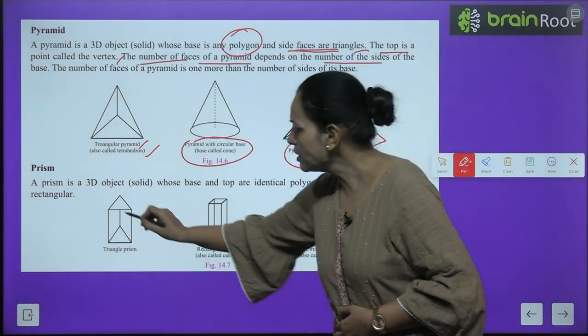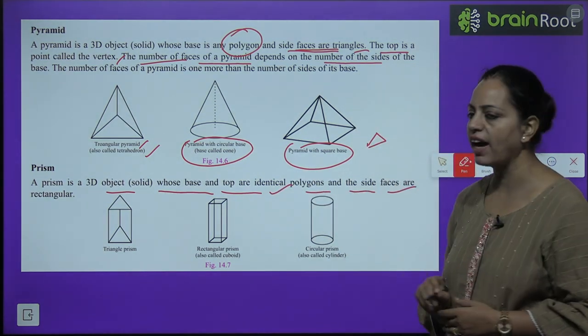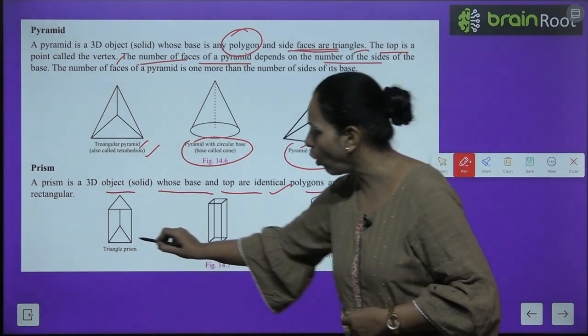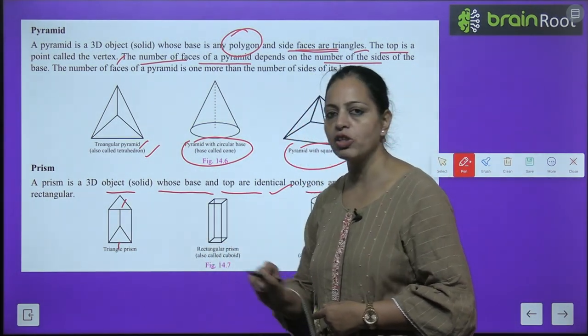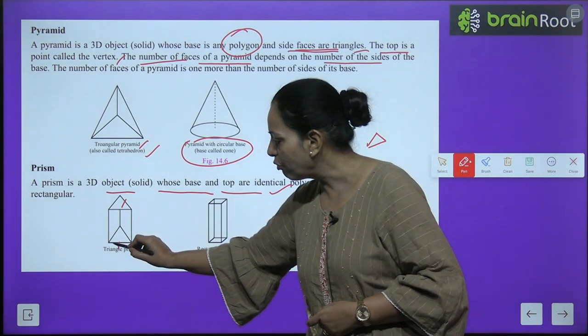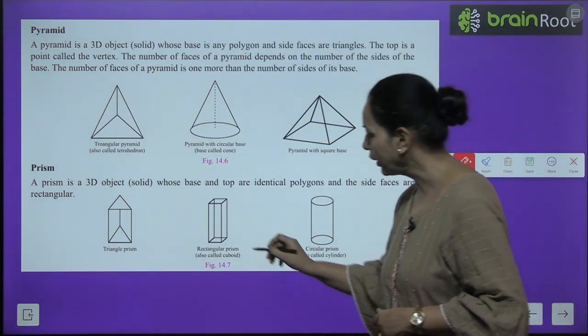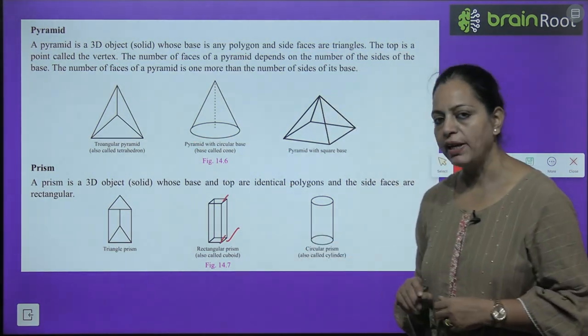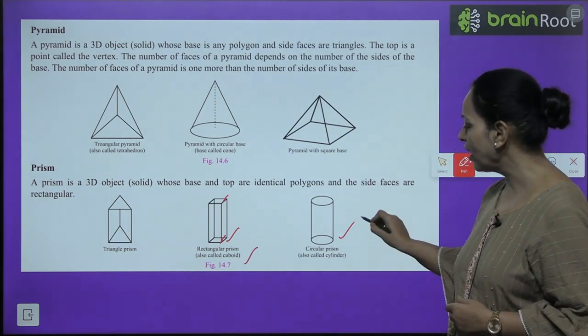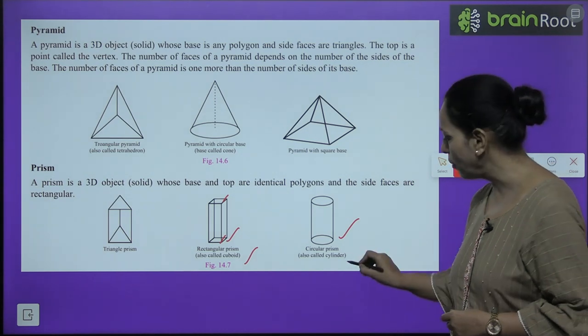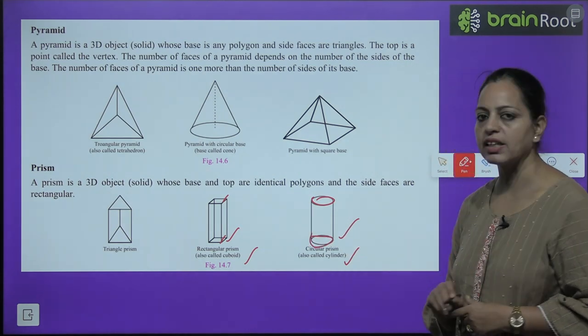Prism: A prism is a 3D object whose base and top are identical polygons and the side faces are rectangular. The top and bottom are the same, and the side faces are rectangles. For example, if there is a triangle at the bottom, there will be a triangle at the top, and side faces will be rectangles. Here we have rectangular prism, which means the top and base are rectangles, and all other faces are rectangles - which we also call a cuboid. And this is the circular prism, which we also call a cylinder. In this, the top and base are circles.